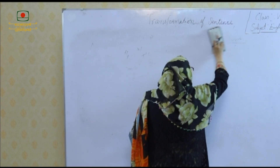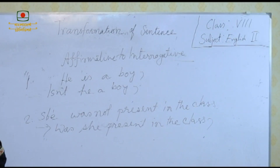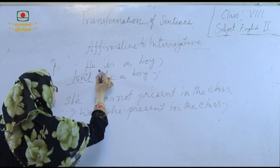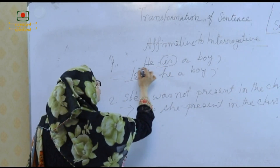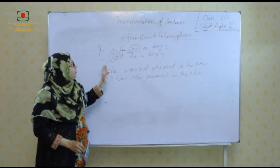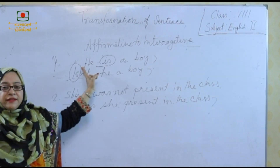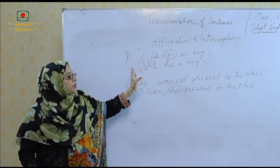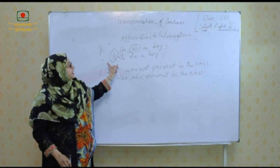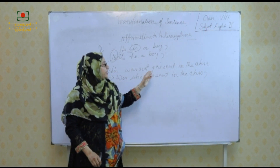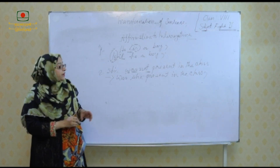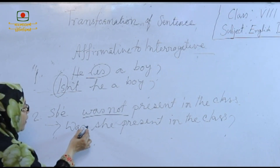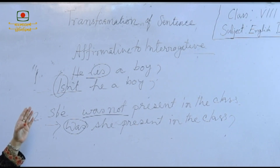Now we can go to affirmative to interrogative. There are two sentences. 'He is a boy' — we turn it into interrogative by using the verb and the negative form. This is the affirmative sentence: 'He is a boy' becomes 'Is not he a boy?' The second: 'She was not present in the class' — this is the negative sentence; when we turn it into interrogative, we use the positive form: 'Was she present in the class?' This is the rule of affirmative to interrogative.